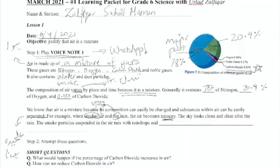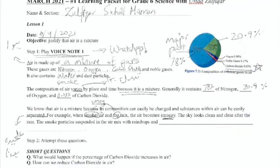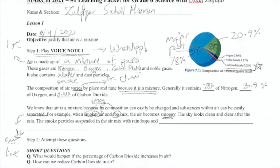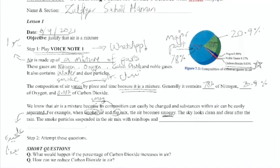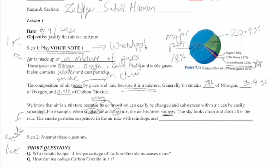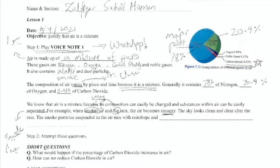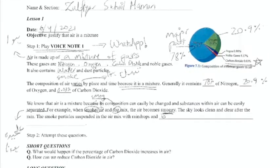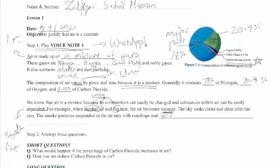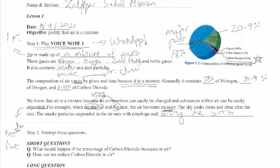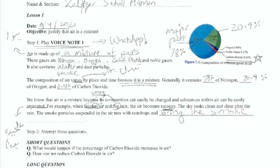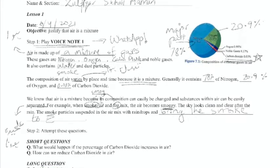The smoke particles suspended in the air mix with raindrops. The rain mixed with smoke. And because it is a mixture, it brings the smoke to earth.